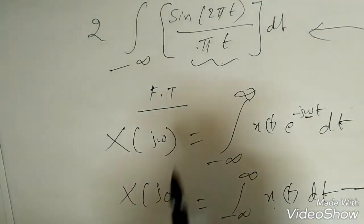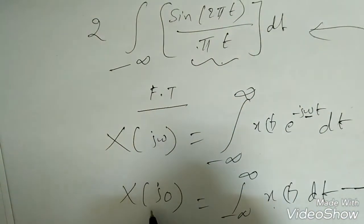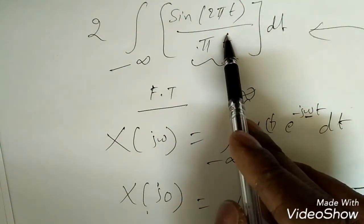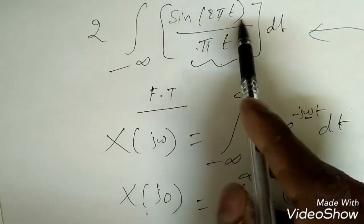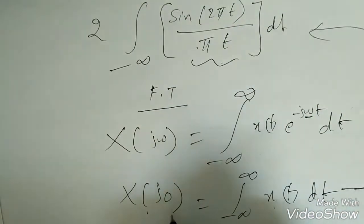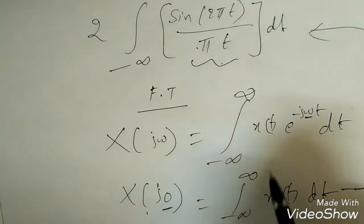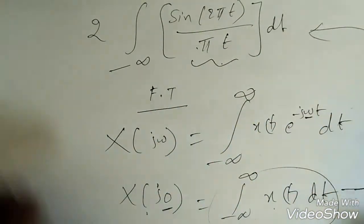That means if I know x of jω for this signal, the Fourier transform of sine 2πt by πt, if I know at ω equal to 0 what is the magnitude, that is nothing but the integration of this. So how to find the Fourier transform of that signal? It's very easy.